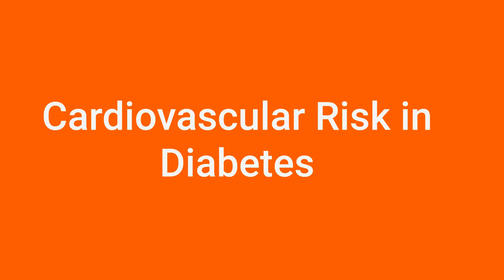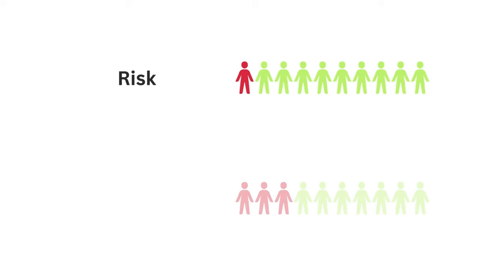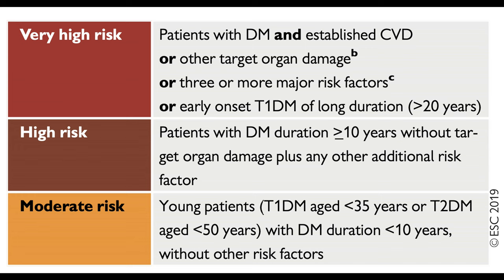The next step should be assessing the cardiovascular risk. Generally speaking, individuals with type 2 diabetes are 2 to 4 times more likely to develop cardiovascular disease. Previously, we had categories of risk based on the duration of diabetes, the presence of established atherosclerotic cardiovascular disease, and the presence of severe target organ damage.